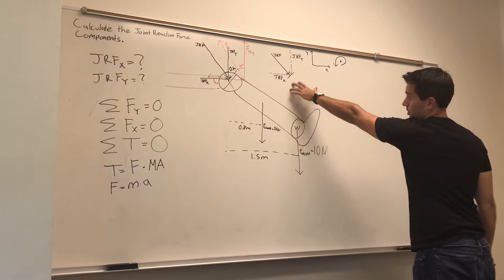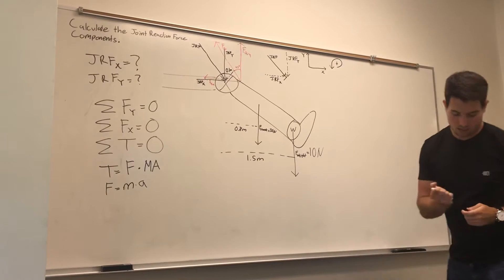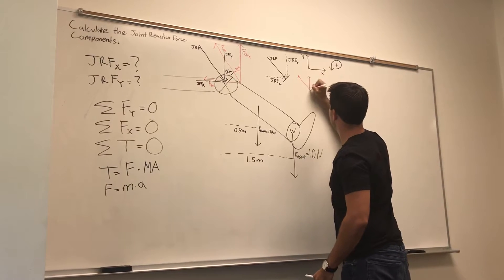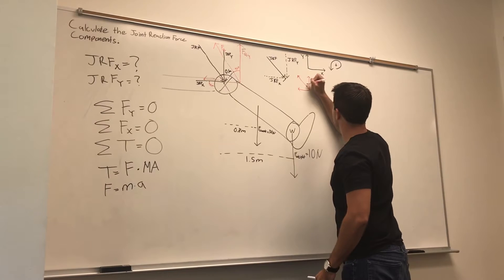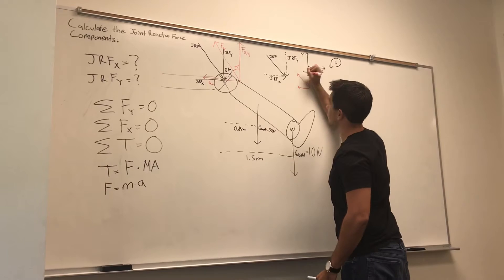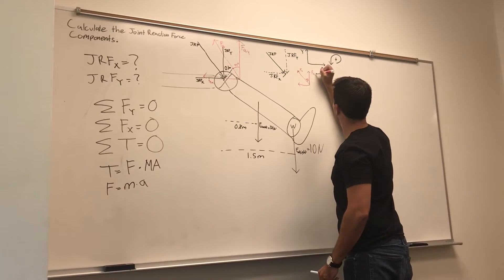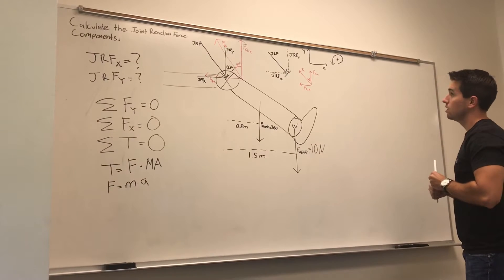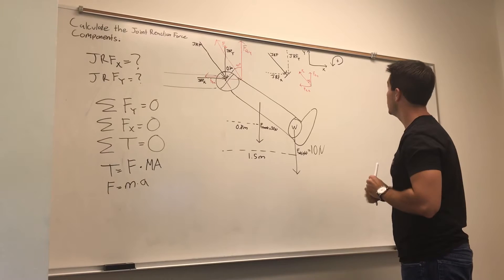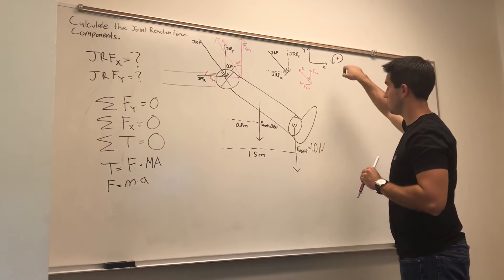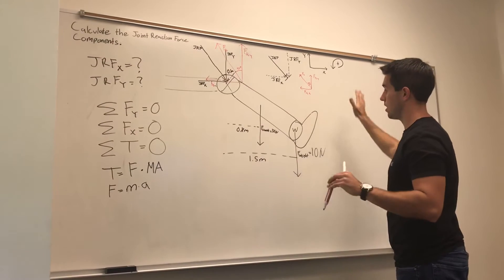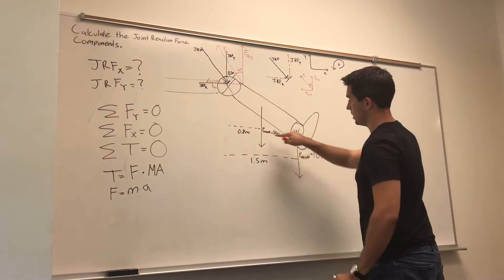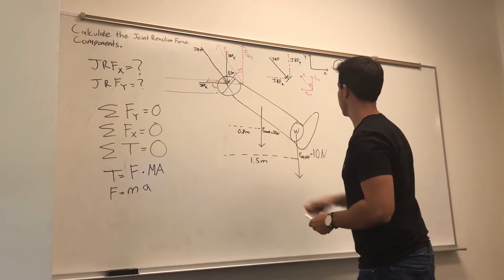If the diagram gets messy, you can draw the force components out separately — you'll still get points for that. You can also redraw the muscle force separately showing its 45-degree angle with FQY and FQX components. We have all forces drawn in with the coordinate system labeled and moment direction defined. The perpendicular distances — the moment arms — for the three forces are given in the problem.